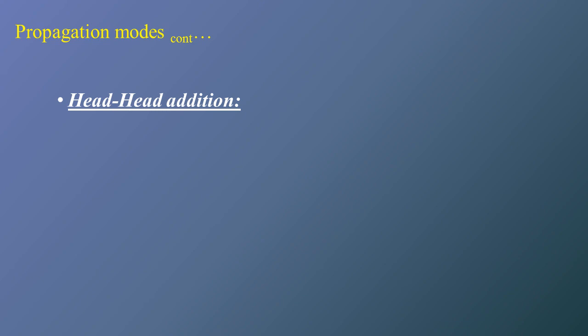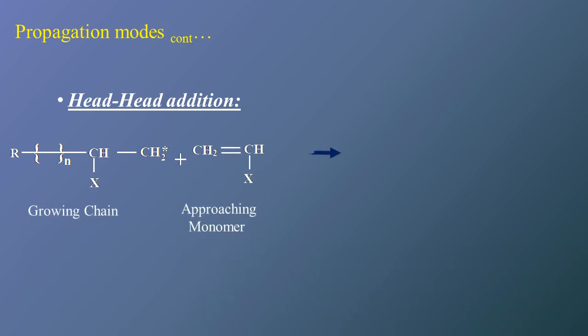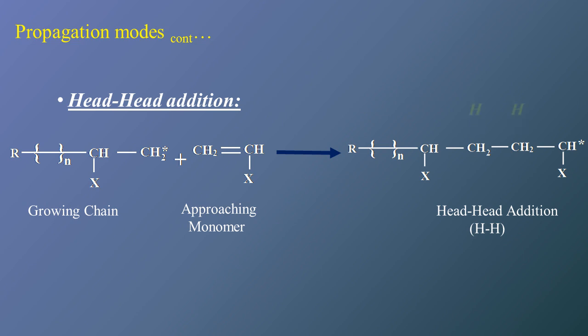The first mode is head-head addition. That means the head of the growing chain will react with the head of the fresh or approaching monomer. Here you can see that is CH2* — that is the initiated polymeric chain or growing chain — reacting with the head position of the approaching monomer. In the product, the new bond is formed between the head-head positions. This is the head-head addition of propagation.